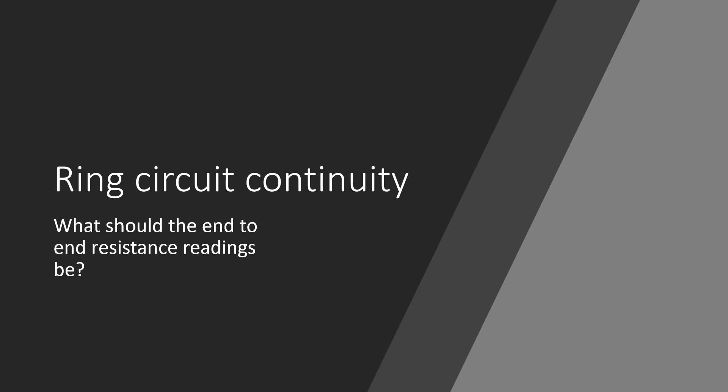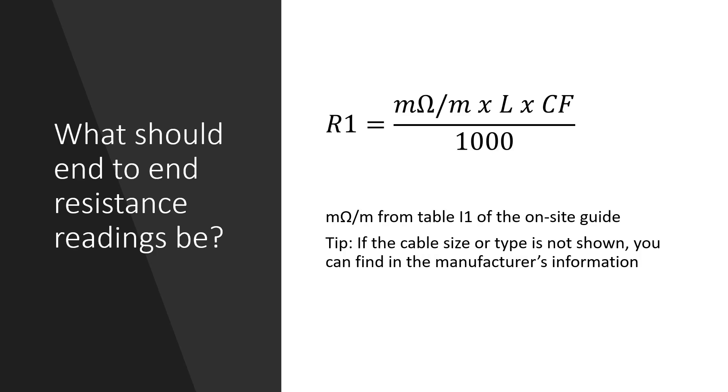To find out what we should expect the readings to be we can find the answer in table I1 of the on-site guide. Table I1 provides values of milliohms per meter for various cable sizes which we can use to work out what to expect the readings to be by multiplying the value by the length and a correction factor and then dividing by 1000.